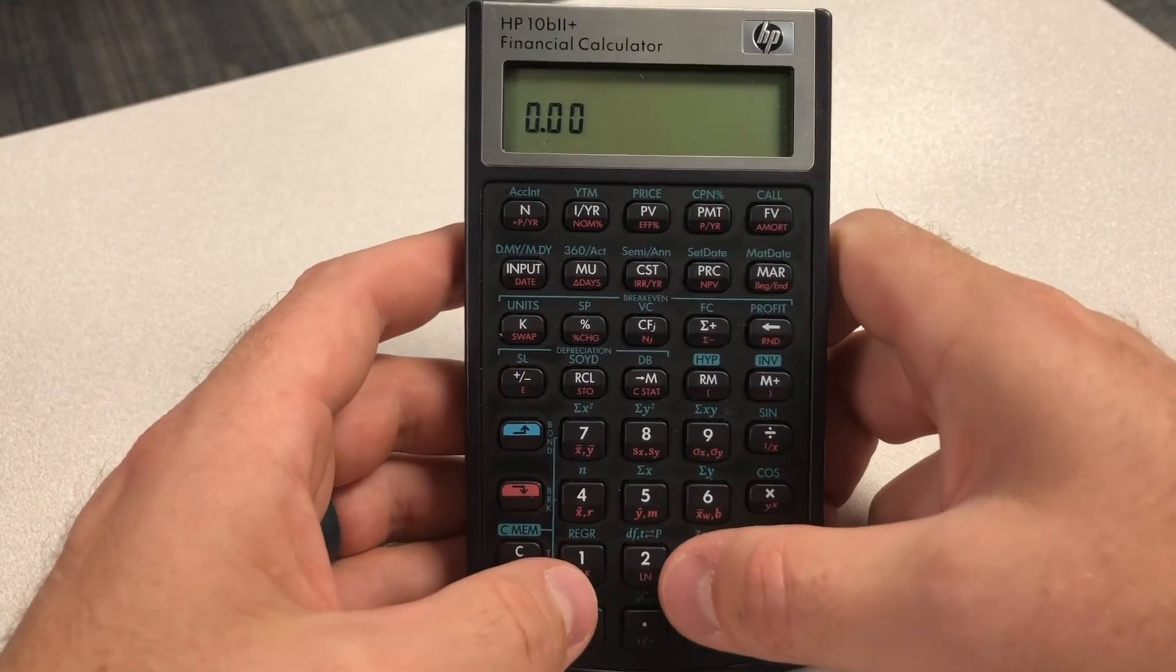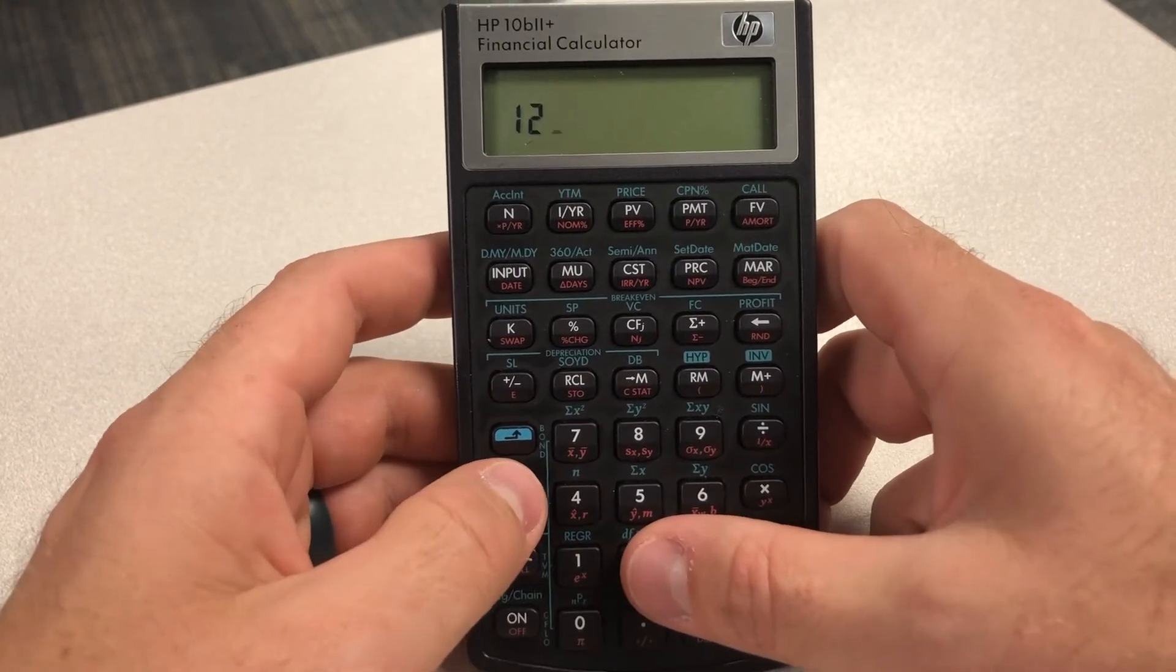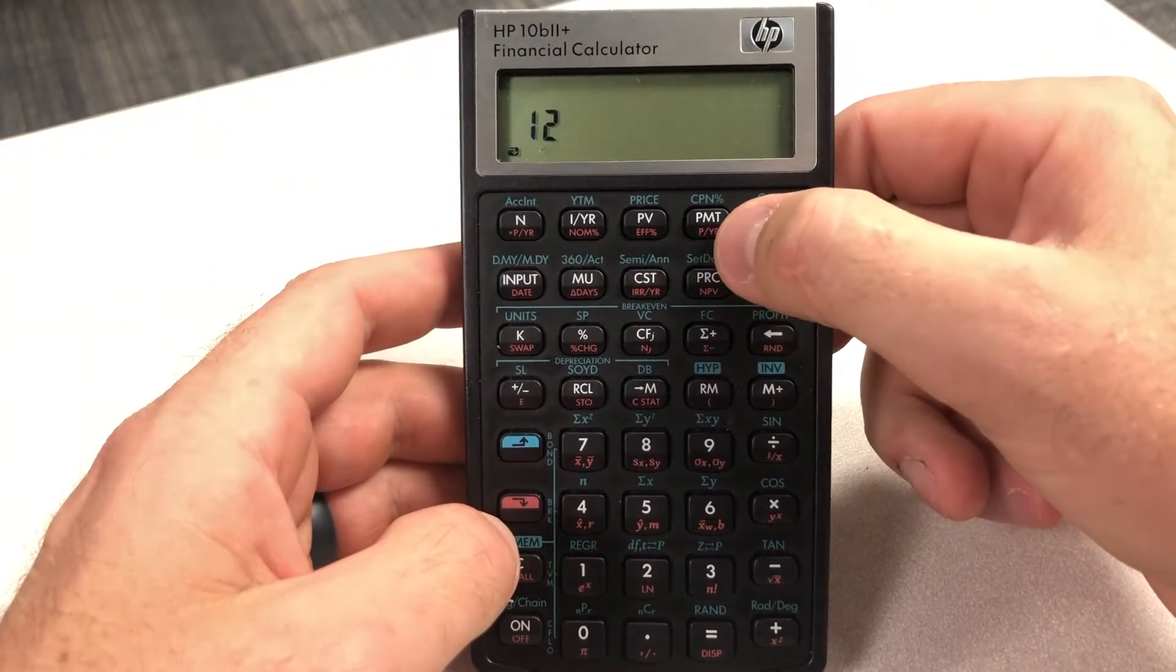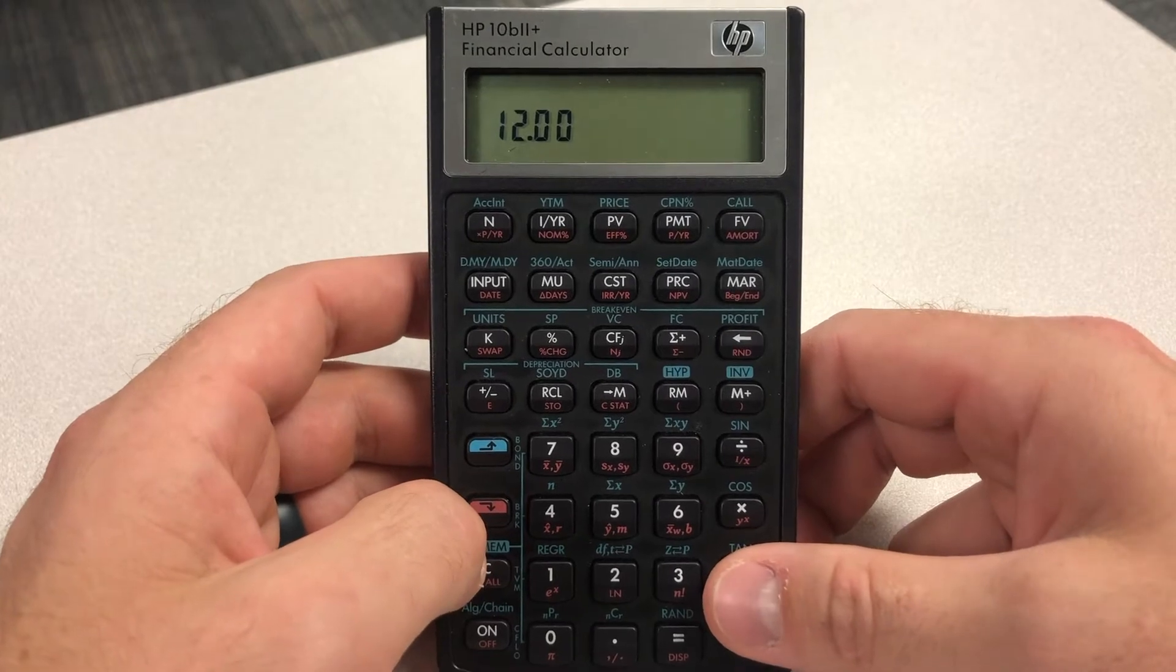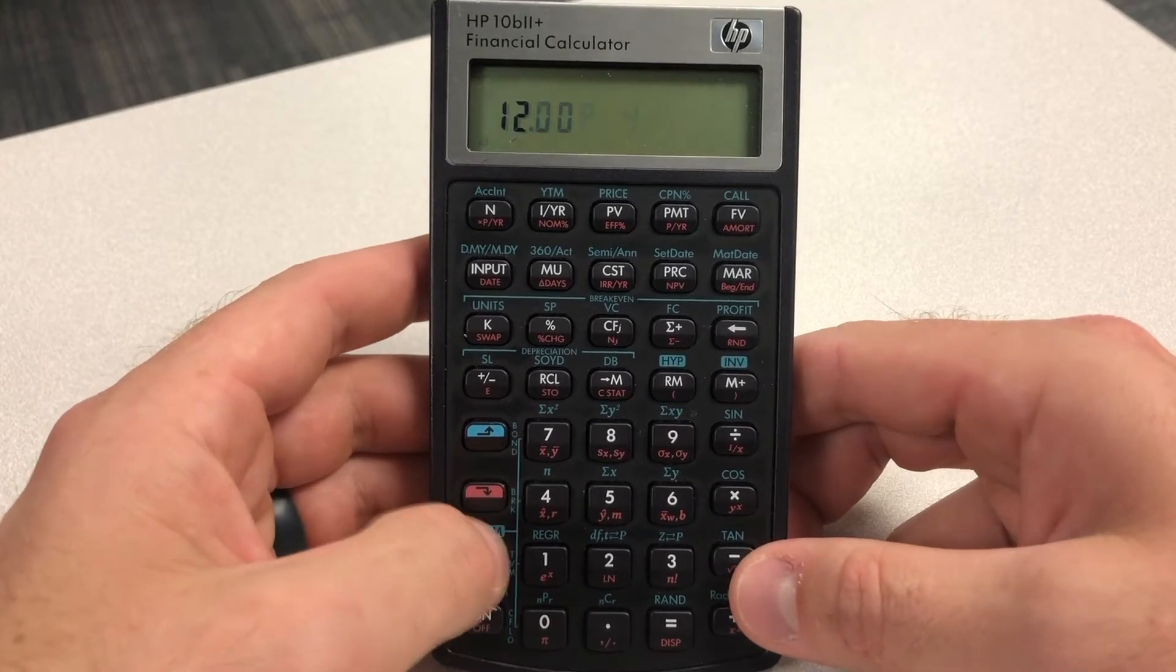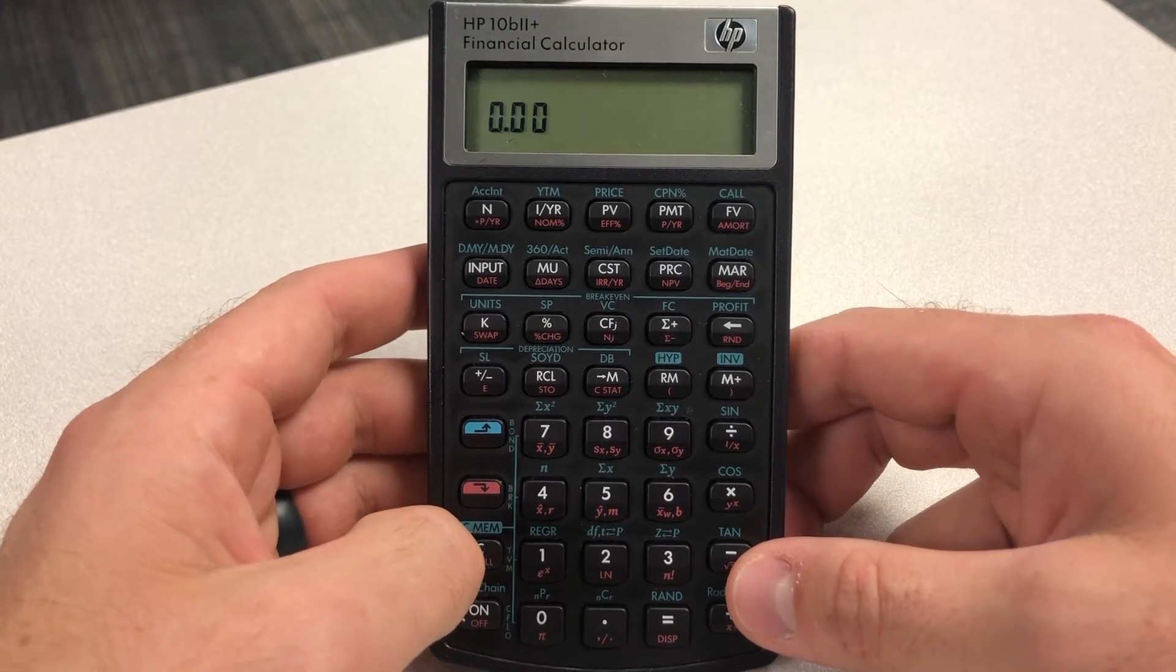If we want to change that, remember, it's 12, shift, and then the period per year. So just underneath payment, period per year. And if we want to see if that actually reset to 12 periods per year, we hit shift, clear all, and we see 12 periods per year. So we know that it reset.